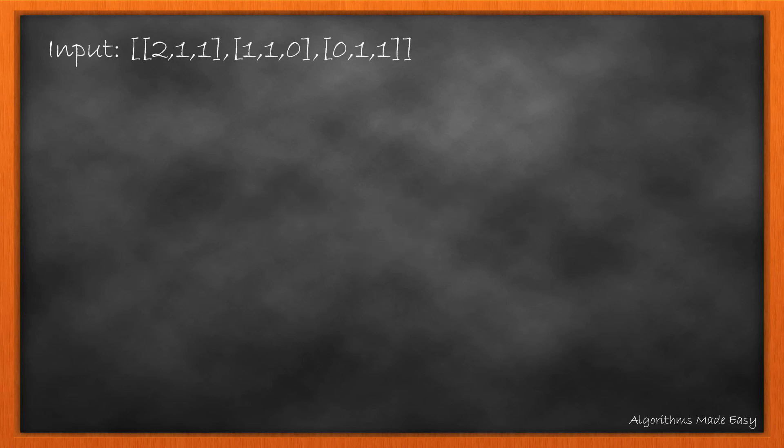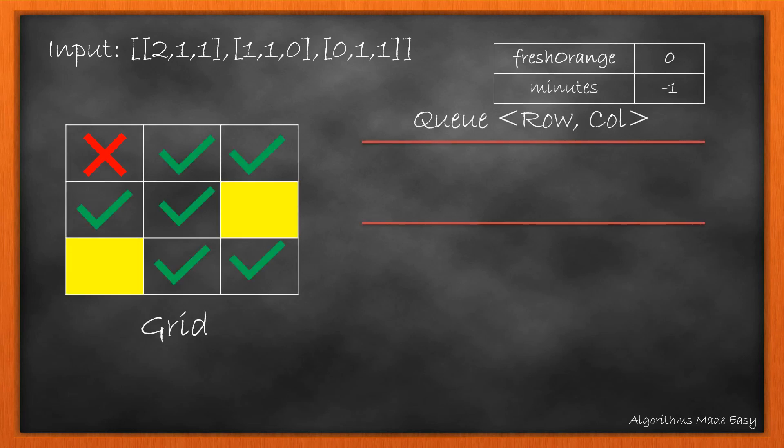We'll start off with this example. It is much more clear when displayed visually. Now that we will be implementing BFS, we will need a queue. We will also need two more variables: first, fresh orange which will hold the number of fresh oranges, and minutes which will hold the number of minutes that have elapsed till now.